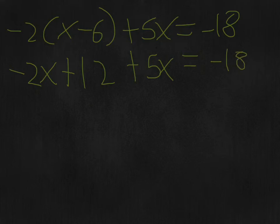The next step is to combine like terms. So you have -2x and 5x, and when you combine them, you're left with 3x + 12 = -18.